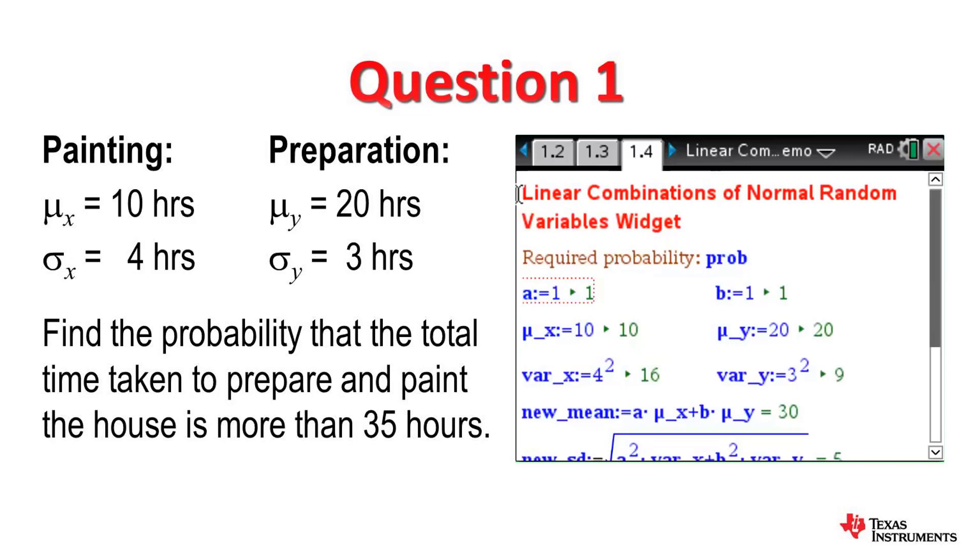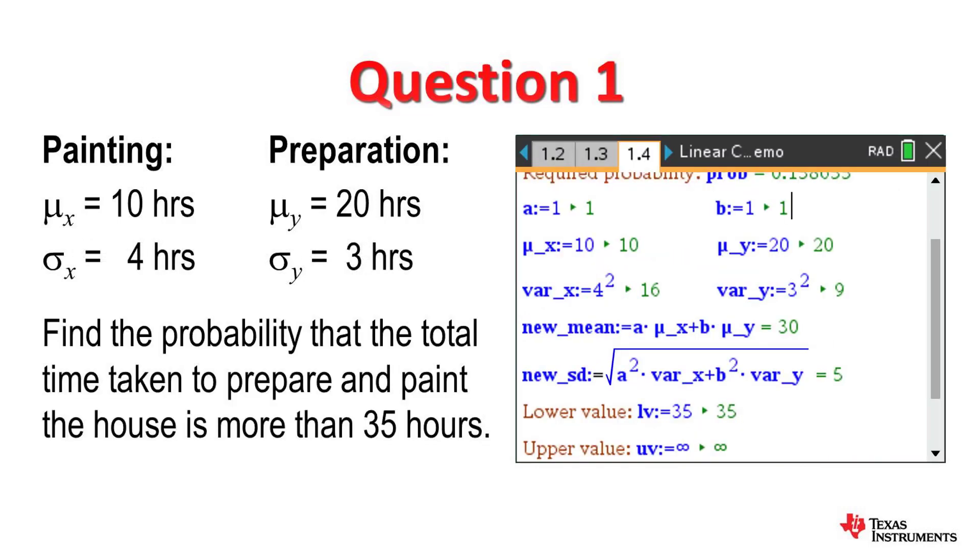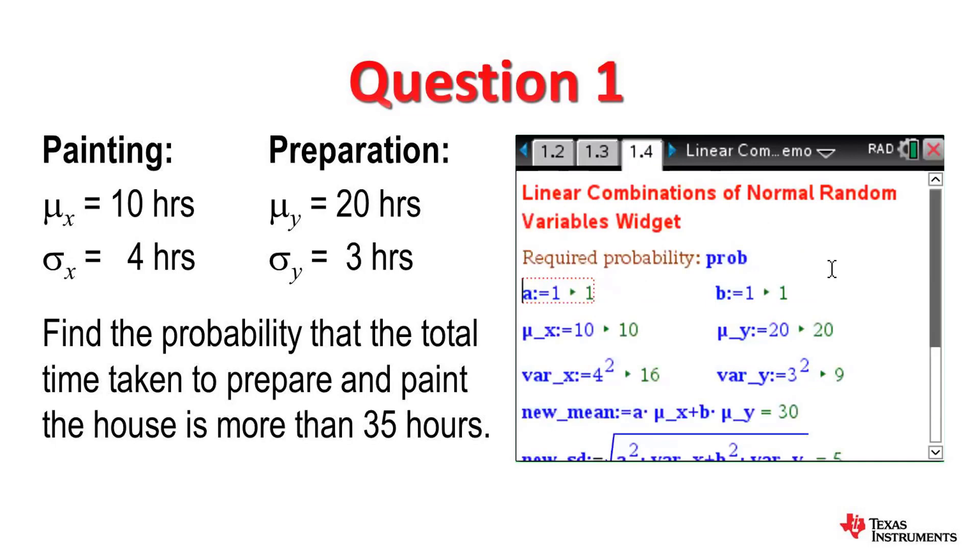What we see here is harking back to our example, we know that a equals 1 and b equals 1. So in effect what we're doing is we're saying that E of x plus y is E of x plus E of y, so E of x plus y is going to equal 30, which is 10 minutes plus 20 minutes. VAR of x plus y is VAR of x plus VAR of y. These are because a equals 1 and b equals 1. So VAR of x plus y is equal to 5 squared or 25, which means that the standard deviation of x plus y is equal to 5. Therefore, what we want to do is, if we go back, we're asked to find the probability that x plus y is greater than 35.